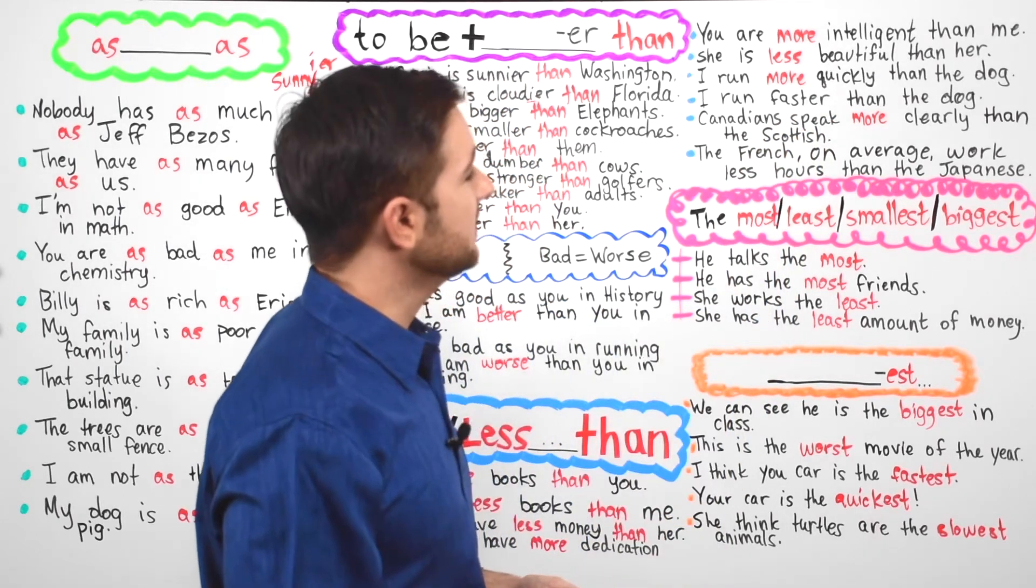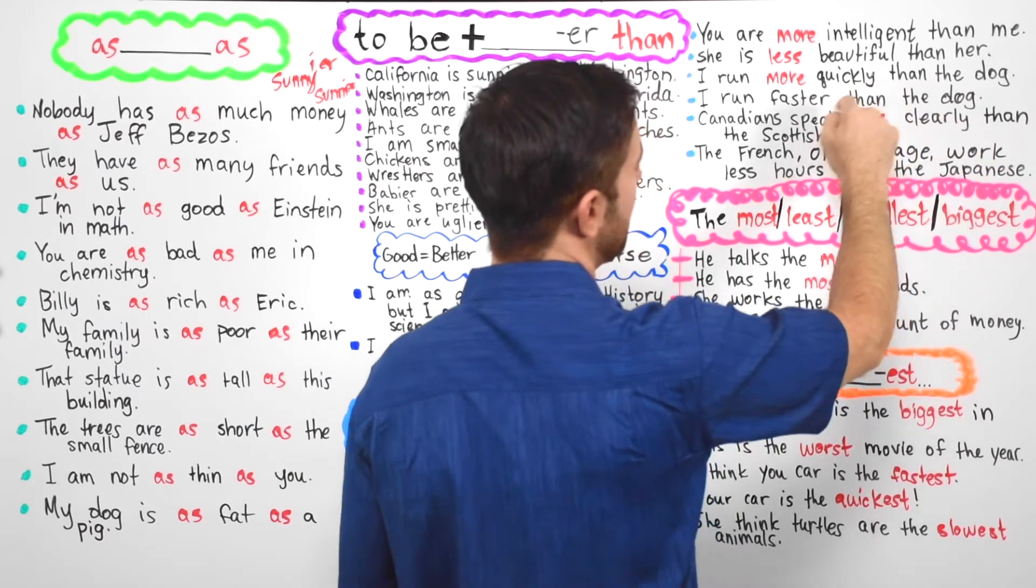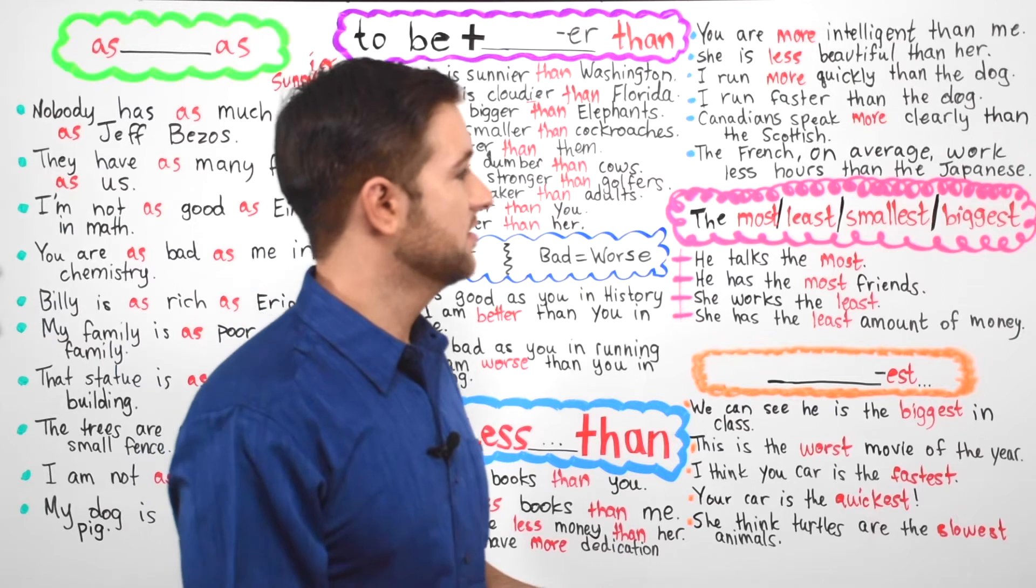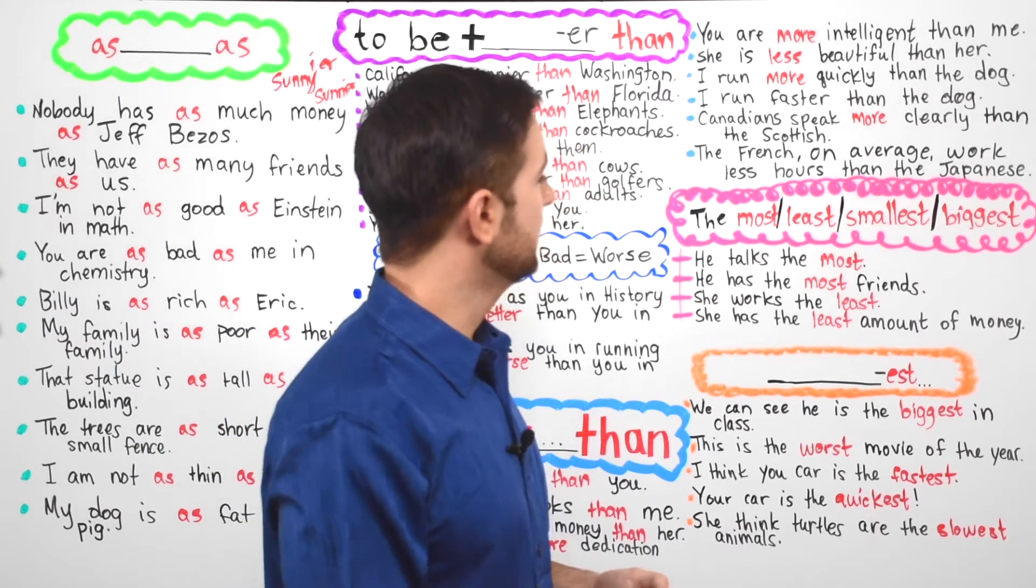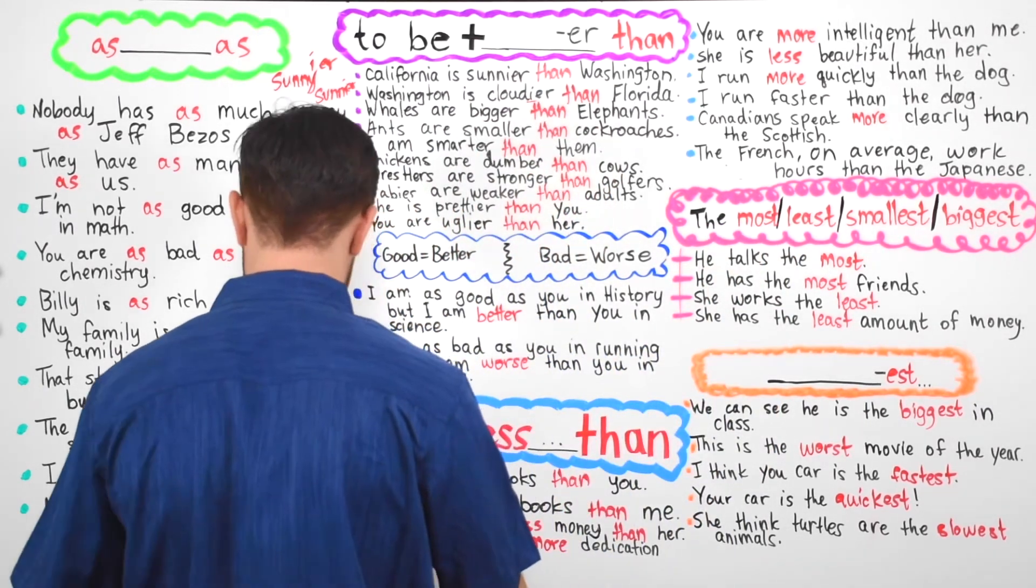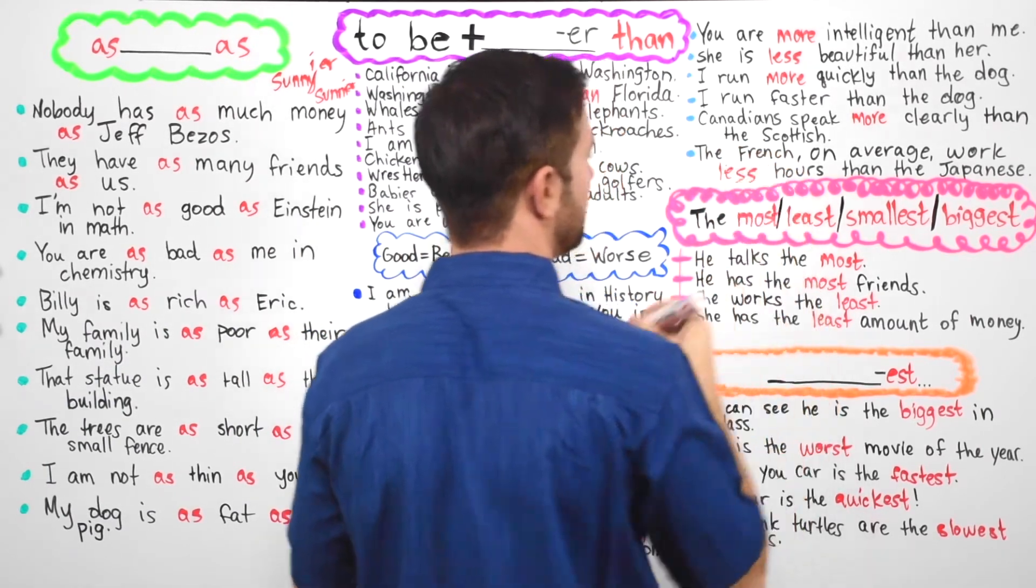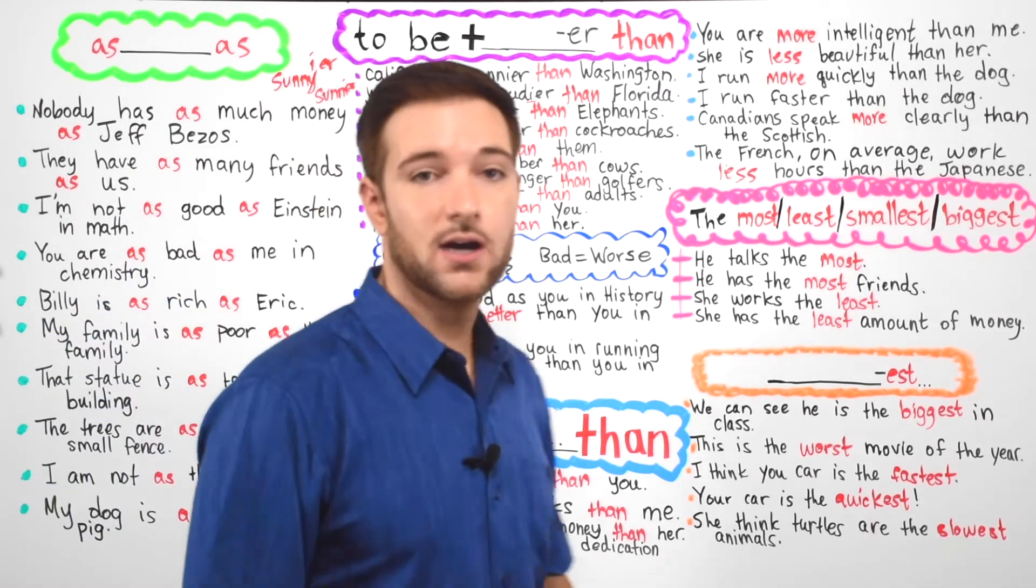Canadians speak more clearly than the Scottish. Same, more clearly, L-Y, L-Y. The French, on average, work less hours than the Japanese. So again, less I should have put in red. I can fix that right now. The French, on average, work less hours than the Japanese.